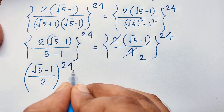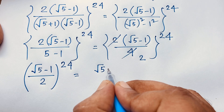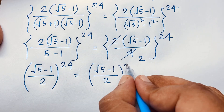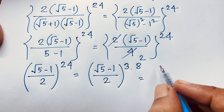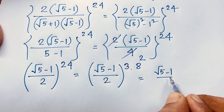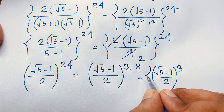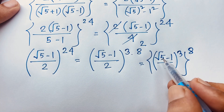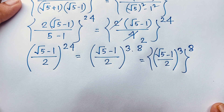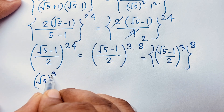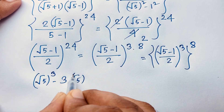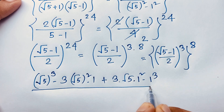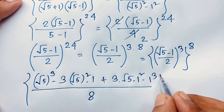Now here ((√5 − 1) / 2)^24 can be rewritten as (((√5 − 1) / 2)^3)^8. Now I apply the formula (a − b)^3 = a³ − 3a²b + 3ab² − b³, divided by 2³ which is 8, all to the power 8.